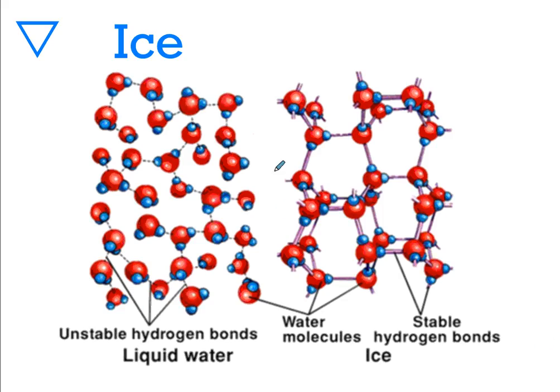So this is liquid water in a nice model. And we'll have a little model set in class so you can play around with this. But essentially, these bonds are able to break and reform as water moves around and sloshes around in a cup. Those bonds are moving and breaking all the time. That's why they're called unstable hydrogen bonds.